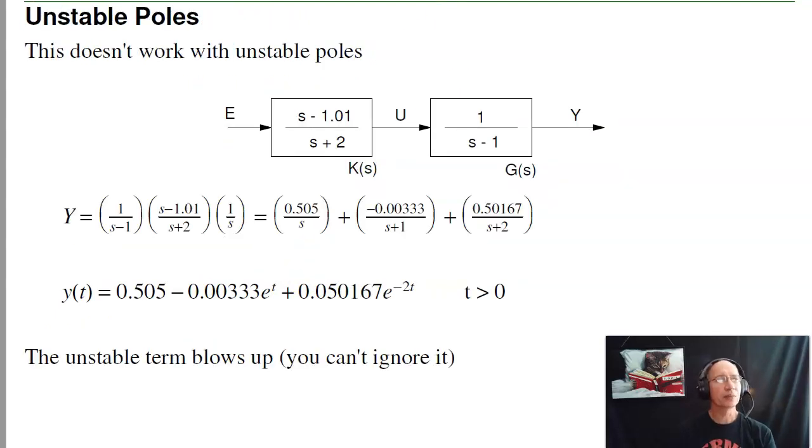In contrast, suppose I try to cancel an unstable pole. I've got a pole of plus 1. I don't like that pole, so let's get rid of it. Put a zero right on top of it. If I miss by the slightest amount, then what happens is when I do my partial fraction expansion, this term is no longer zero. It's close to zero, but not exactly zero. So what that means is that this term is now minus .003 e to the t. e to the t blows up.